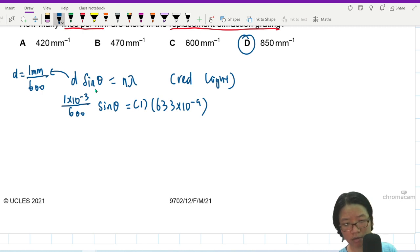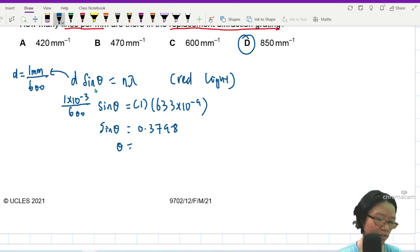This N is 1. Lambda for red light was 633 nanometer, 633 times 10 to the power of negative 9. If you convert everything to meter, the units will naturally cancel off. So just with a quick press of my calculator, I'll get my sine theta as 0.3798. So I can find my theta. This is 22.3 degrees. And this is how you can also check your answer. Answer check.